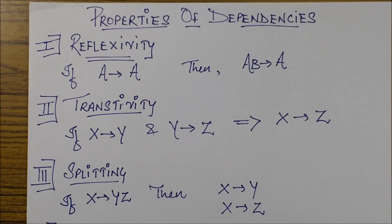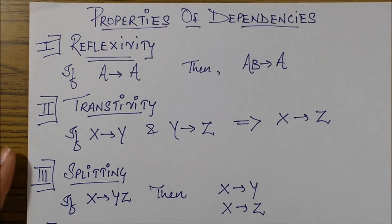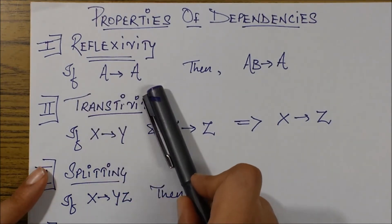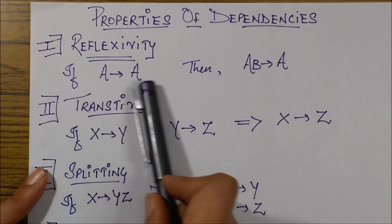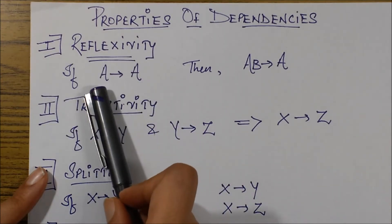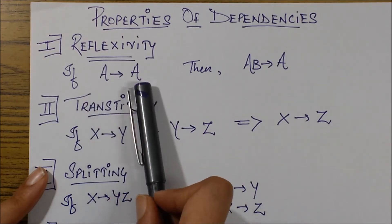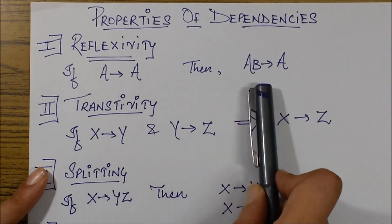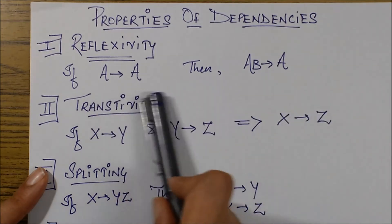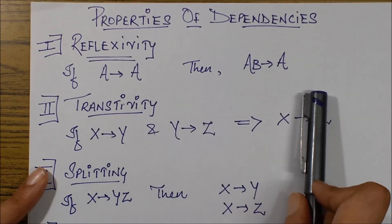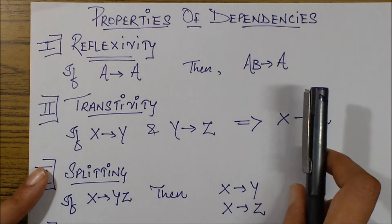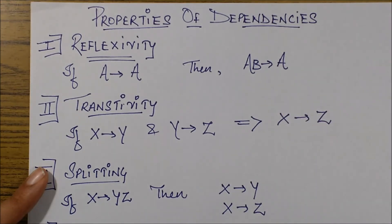Let's start with reflexivity. Reflexivity states that if A goes to A, which is a trivial dependency actually, every attribute can determine itself. So if A determines A, then AB determines A. This is basically a type of trivial dependency. Trivial basically means that it is very obvious. We do not need to derive it from anything else.